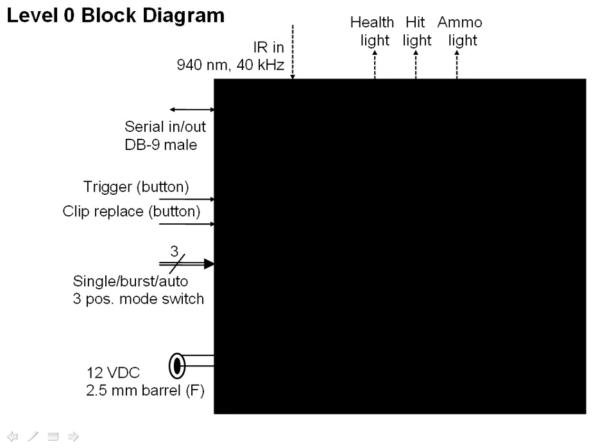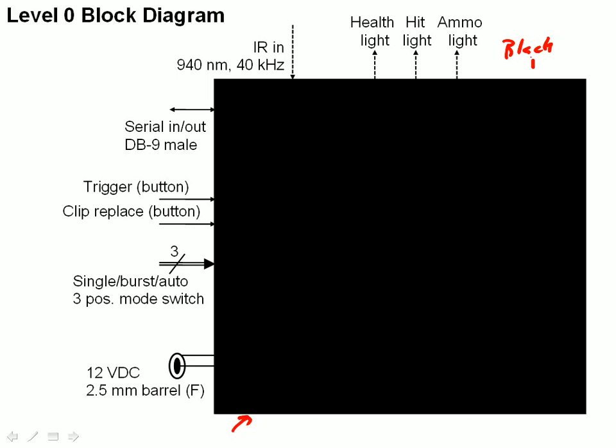We start off when talking about block diagrams with three levels. The first, or highest level with the least detail, is called the level zero block diagram. In a level zero block diagram, you simply have a black box with inputs and outputs. Inputs are represented with inward arrows, while outputs are represented with outward arrows. All the inputs and outputs are labeled. So the first step in creating a block diagram is just to identify your inputs and outputs — what needs to come out of your system as a whole.